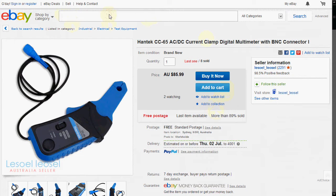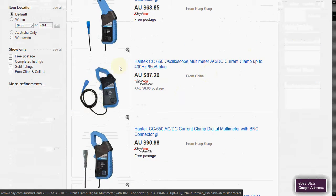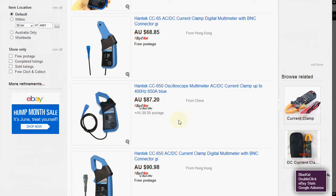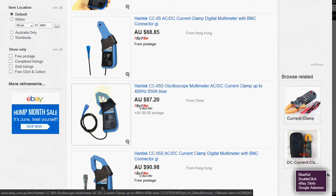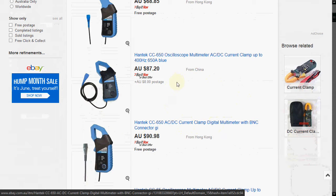I just want to also show you, if you're on eBay and you type in Hantec current clamp, you'll find there is another version as well. So there's this version here which is 650 amp, which is pretty large. It's got bigger jaws so you can fit a larger conductor through there. It's also BNC, and its scale would have to be different to measure that sort of amperage, otherwise you're going to be putting out a pretty high voltage. So they're available as well for pretty much the same price.